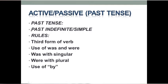Past Tense में सबसे पहले हमारे पास है Past Indefinite या Simple Tense. Past Indefinite Tense के active sentences को passive में change करने के जो rules हैं वो हैं: third form of verb — यानि verb की तीसरी form इस्तमाल करनी है। Use of was and were — was जो है singular noun के साथ यूज़ करना है, और were जो है plural यानि एक से ज़्यादा के साथ इस्तमाल करना है। साथ में by भी यूज़ करना है।